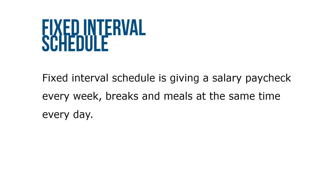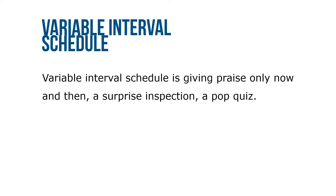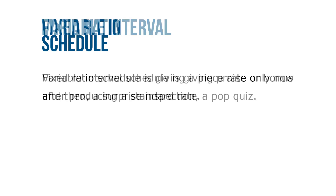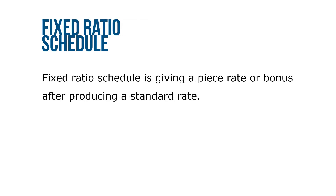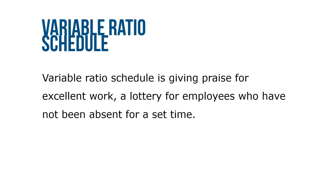When electing to use intermittent reinforcement, there are four alternatives. Fixed interval schedule: a salary paycheck every week, breaks, and meals at the same time each day. Variable interval schedule: giving praise only now and then, a surprise inspection, or a pop quiz. Fixed ratio schedule: giving a piece rate or a bonus after producing a standard rate. Variable ratio schedule: giving praise for excellent work, or a lottery for employees who have not been absent for a set period of time.